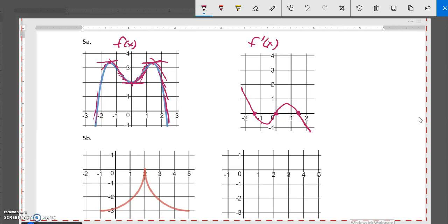Now if I look at 5b, this is a really interesting one. It looks like the slope here is 0. So at negative 1, it's like the slope's 0. And at 5, it looks like the slope is also 0. So I'm pretty confident about those points.